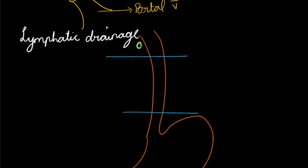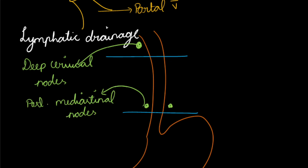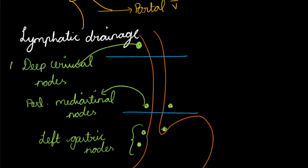Regarding lymphatic drainage: the upper cervical part drains into the deep cervical nodes, the thoracic part drains into the posterior mediastinal nodes, and the abdominal part drains into the left gastric nodes. The three lymphatic drainage groups are deep cervical, posterior mediastinal, and left gastric nodes.